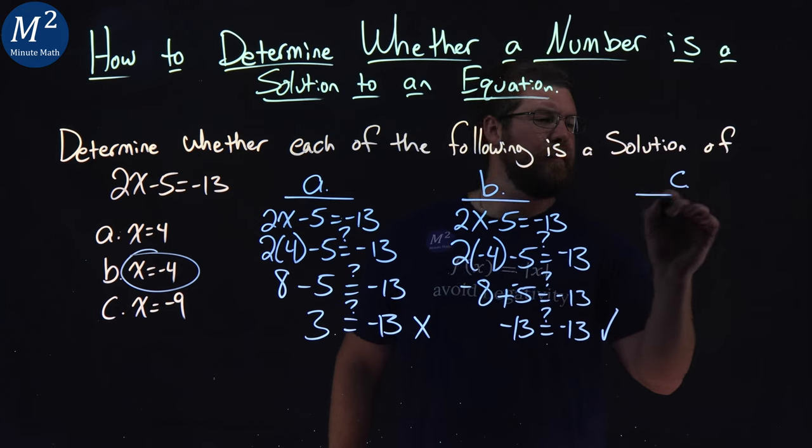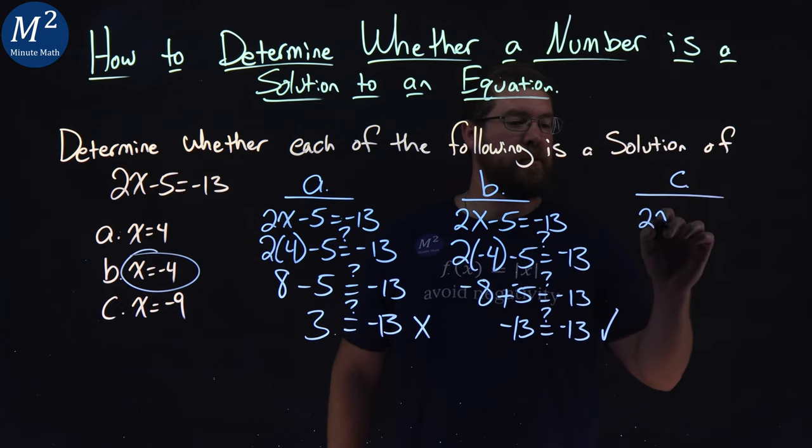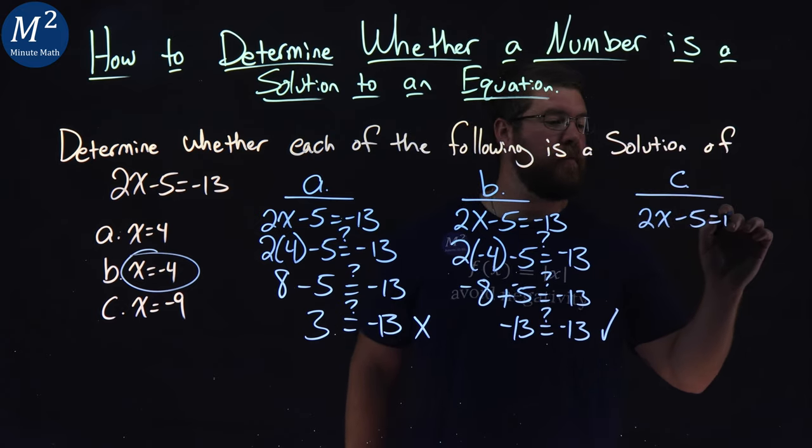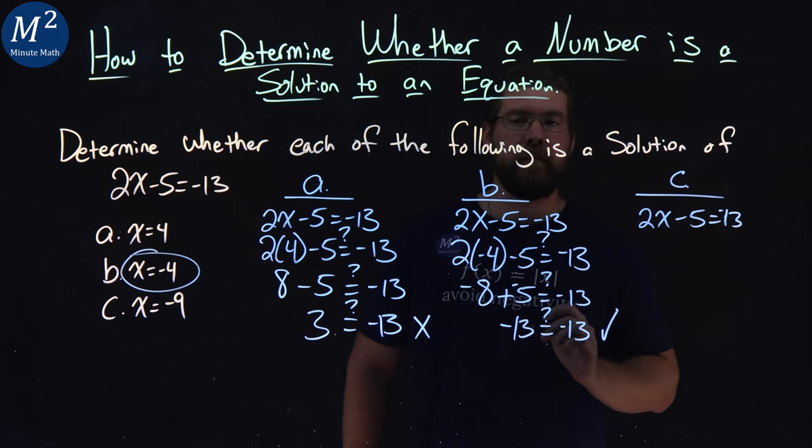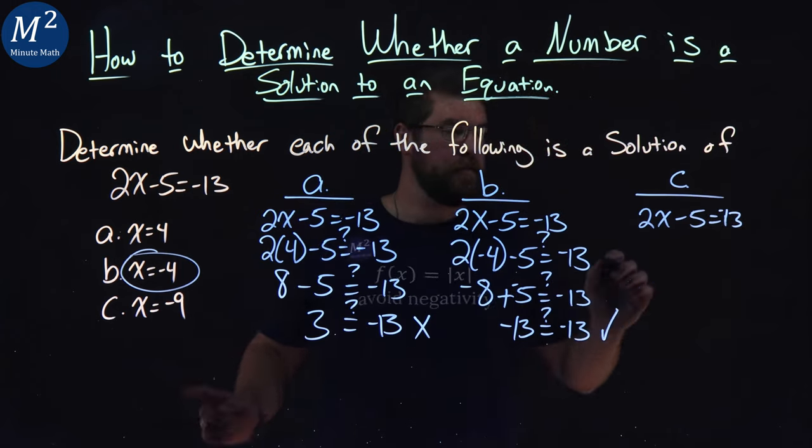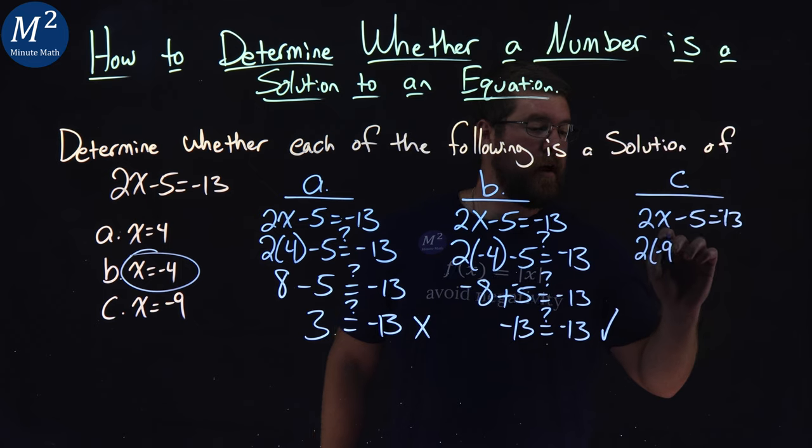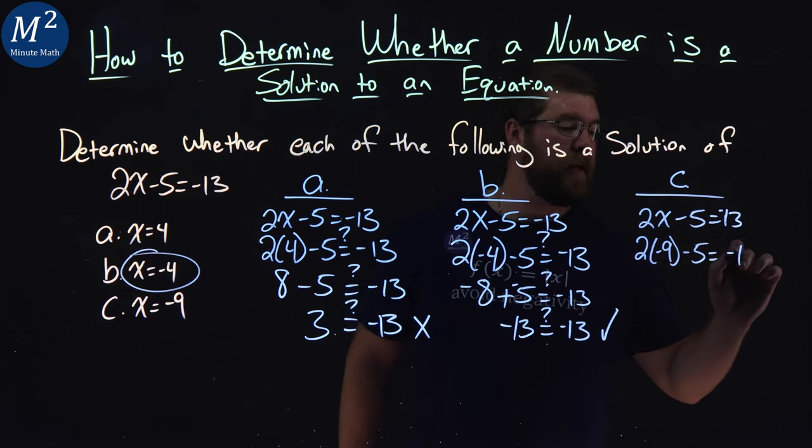Part C. Last one to check. Again, rewrite the equation. 2x minus 5 equals negative 13. We're going to plug in negative 9 in for x. 2 times negative 9 minus 5 equals negative 13.